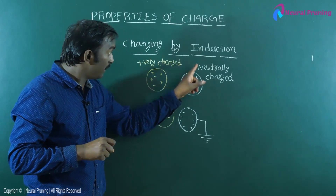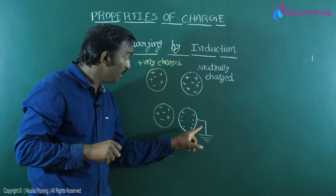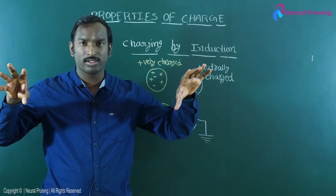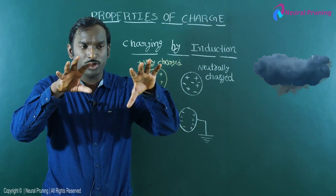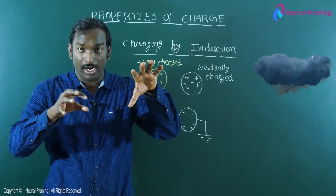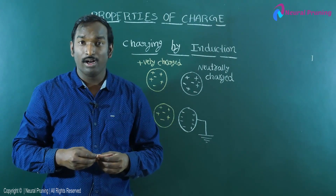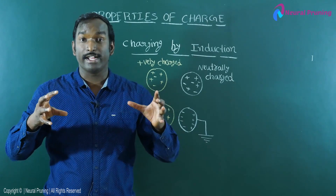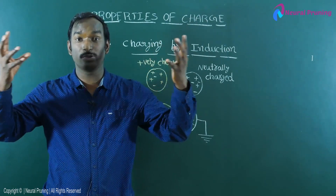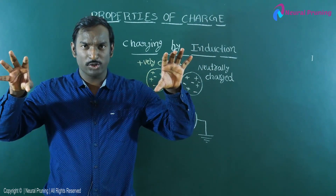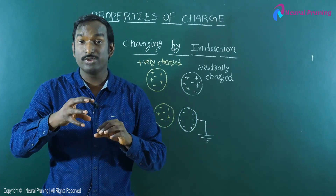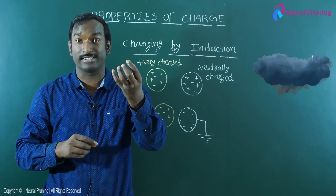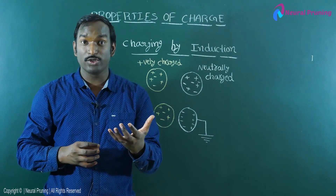Charging by induction is just like what happens in clouds. When two charged clouds come very close to each other, all the charges accumulate on the surface of the clouds and the electric field increases. Once the electric field reaches its maximum value, air molecules lose their insulating property. Air is normally an insulator, but between two very close clouds, air loses its insulating property and the charges move from one cloud to the other. That is the reason for lightning and thundering — due to charging by induction.